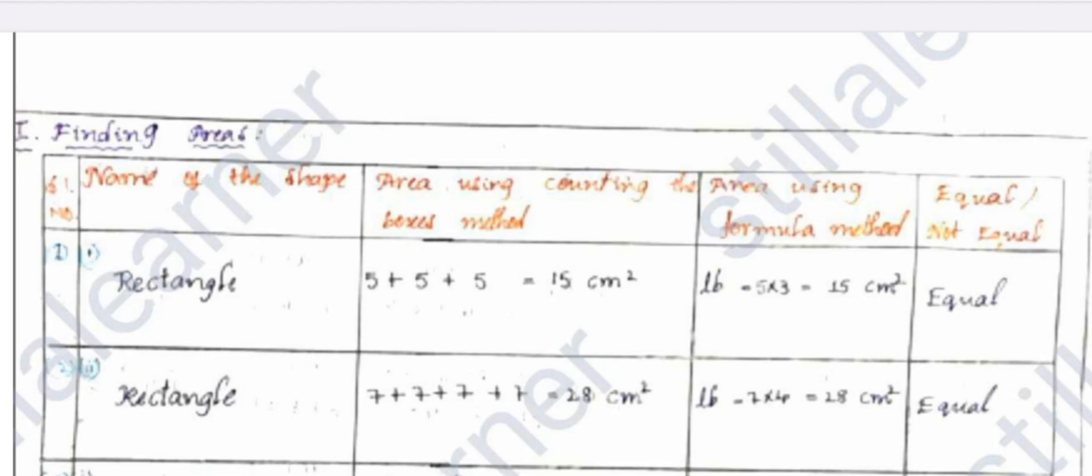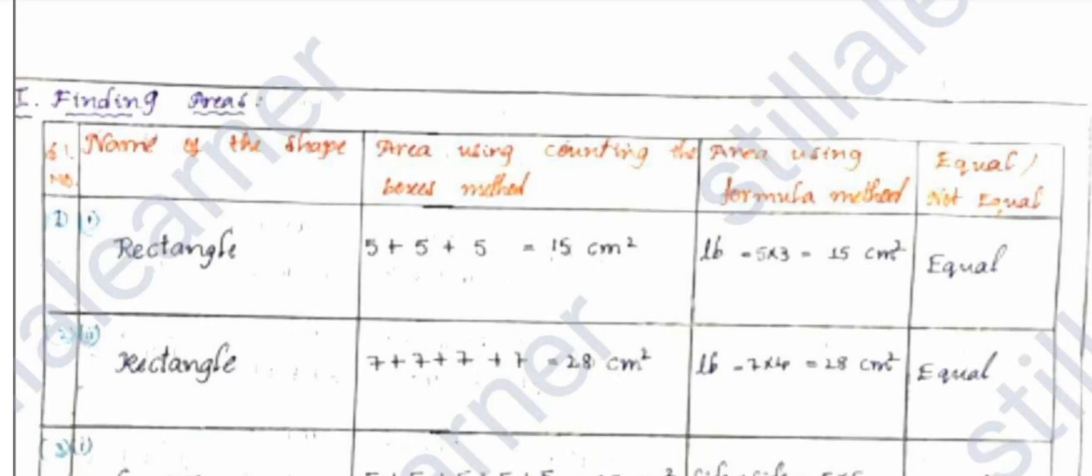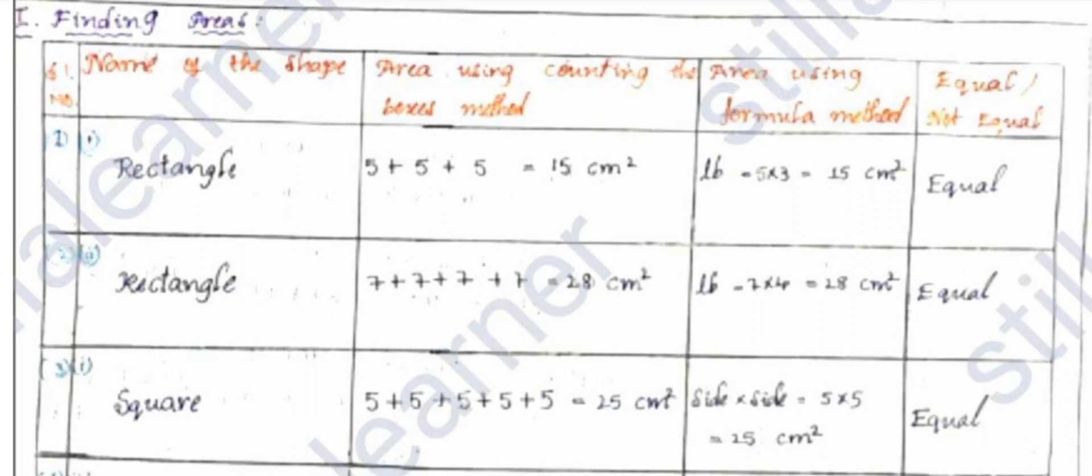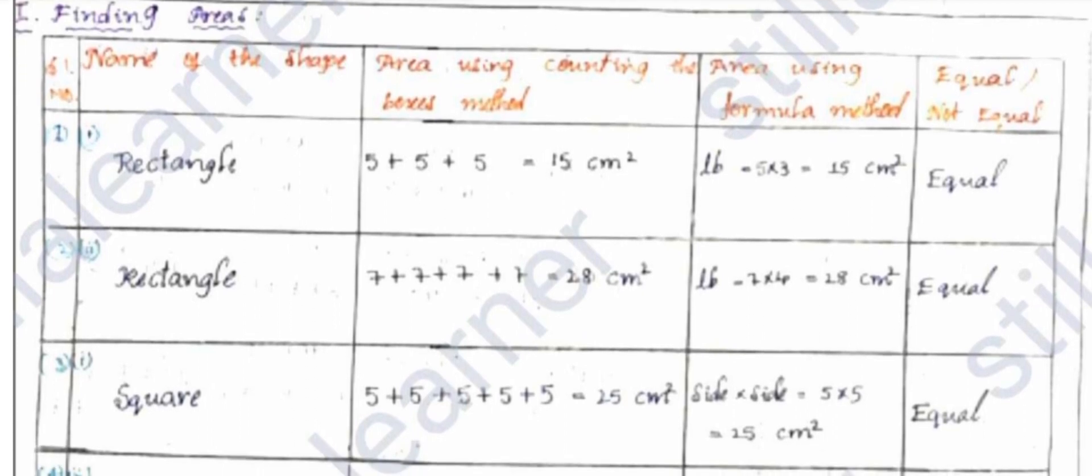Then you have to find the areas also—area of rectangle and area of square. You know the formulas: area of rectangle is L×B, whereas area of square is side×side or L×L.